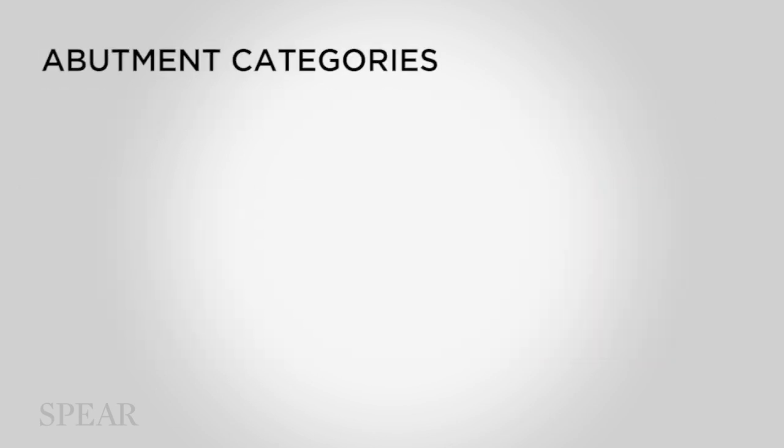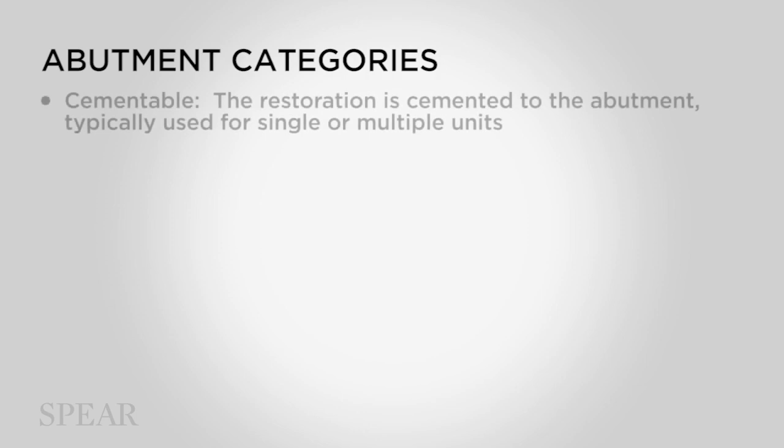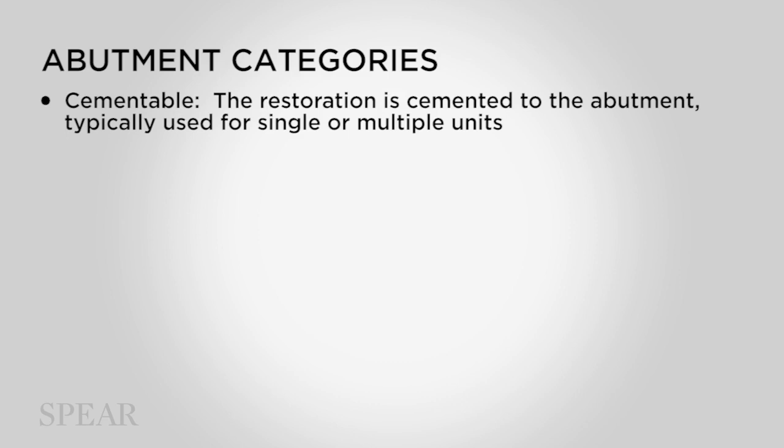There are four kinds of abutments that we need to think about: cementable and screw retained. In cementable abutments, the restoration is cemented or bonded to the abutment, just like you would a conventional crown to a tooth. Most commonly, we use a cementable abutment for a single or sometimes one, two, or three units that aren't splinted together. Sometimes they're used for bridges.